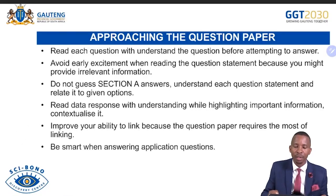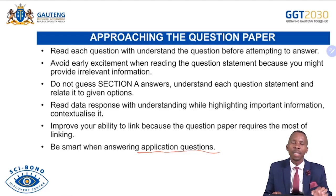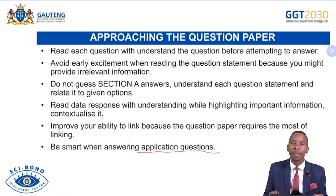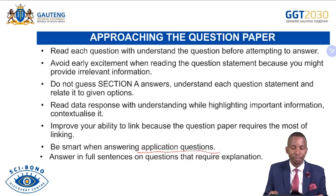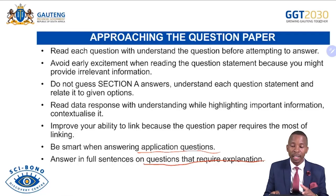Be smart when answering application questions — examples are 2.5, 3.5, and 4.5. Avoid clamping two points into one; separate them and write in full sentences. If evaluating, ensure your evaluation provides both negative and positive effects, but write in full sentences. Always start with answers you are sure are correct. Answer in full sentences on questions requiring explanation — do not list if you have to explain, or you won't get full credit.